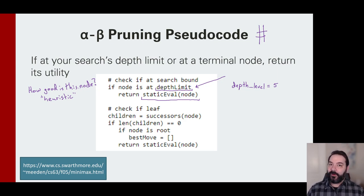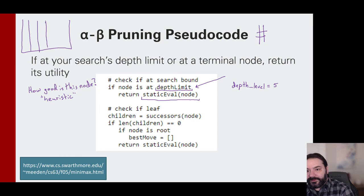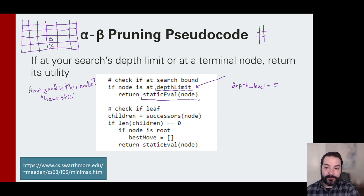The notion is, how good is this node? Because remember, right now we're treating this like it's a terminal state, even though it's not. We're saying, can you give me a heuristic of how well we're doing? This is where we talk about heuristics with A-star search. The same thing is going on here. You need to give me some kind of heuristic that says whether or not this is a good state. For example, one of the assignments I've presented to my students is connect four.